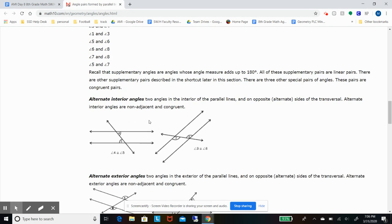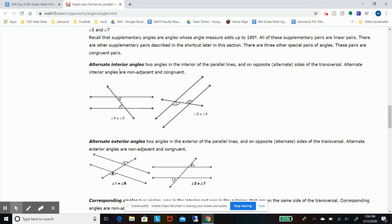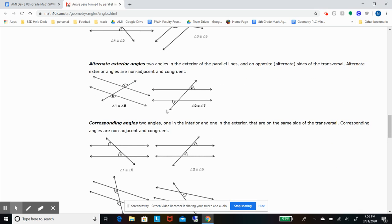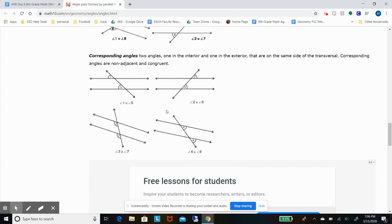And so there's lots of examples of vertical pairs, supplementary pairs, and then as you move on down, an example of alternate interior angles, alternate exterior angles, and corresponding angles.